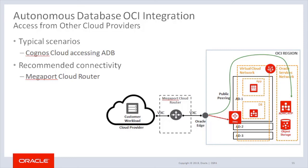For third-party tools accessing Autonomous Databases, the recommended connectivity service is through Megaport cloud routers. Megaport makes it easy to connect to Oracle cloud regions across the US, Europe, and Asia Pacific. With Megaport you can provision dedicated and private connections from 386-plus Megaport-enabled data centers to Oracle Cloud Infrastructure Fast Connect and Oracle Cloud Infrastructure Fast Connect Classic in less than 59 seconds. Scalable bandwidth enables you to pay only for what you need, when you need it.